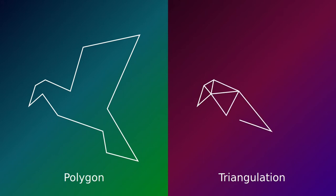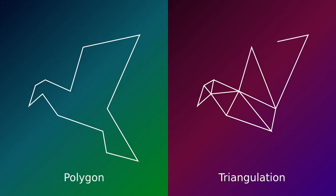Triangulating a polygon means converting it into a set of triangles. Next, I'll show how to implement the so-called ear clipping algorithm to triangulate a polygon in JavaScript.